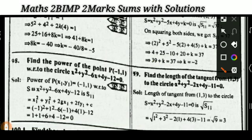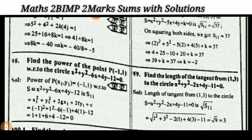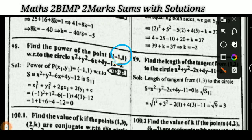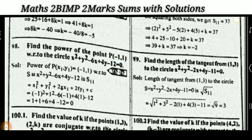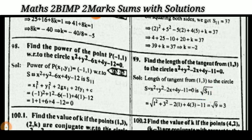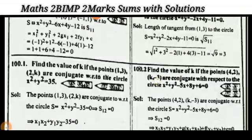Next: find the power of the point — simply find the value of S₁₁ by substituting the given point into the circle equation. Then find the length of the tangent from (1, 3) to the circle using the formula √S₁₁. These are very important two-mark questions.